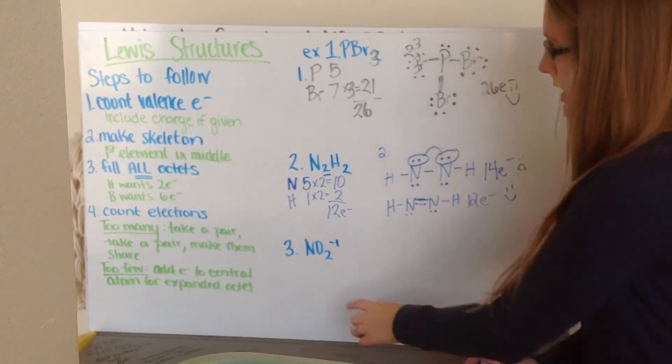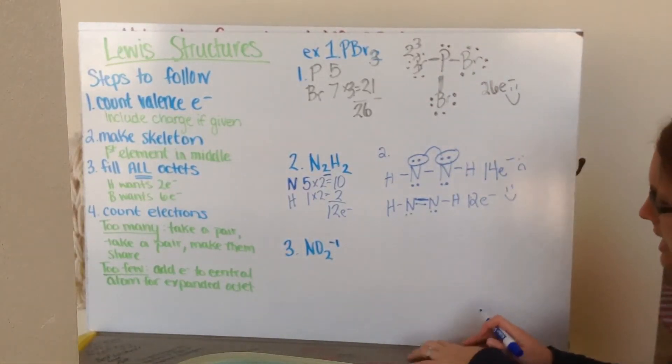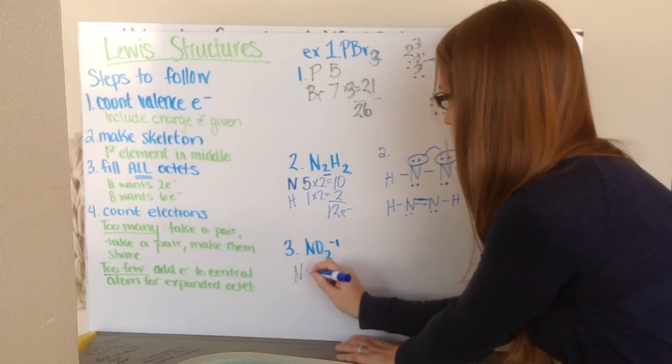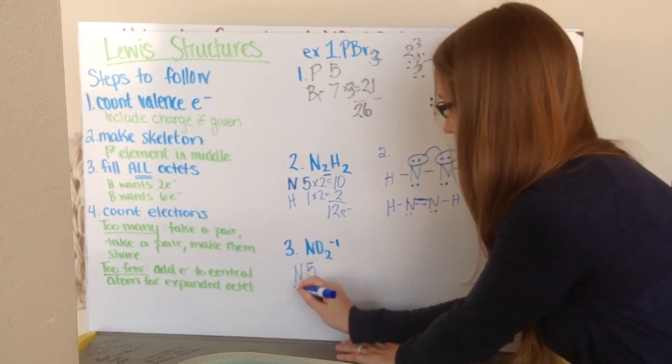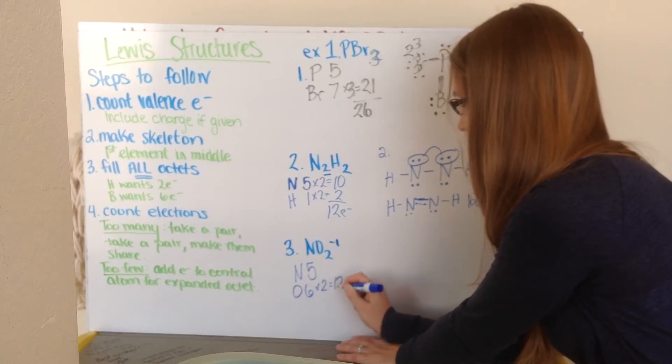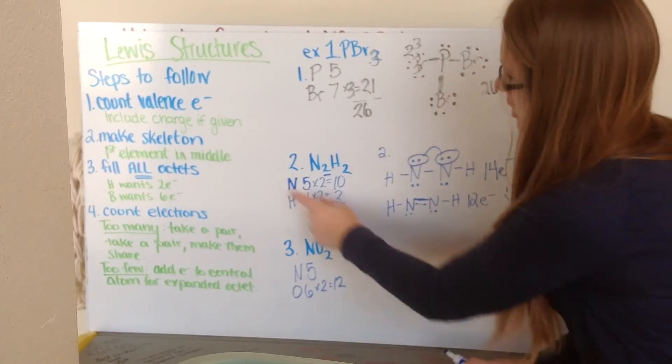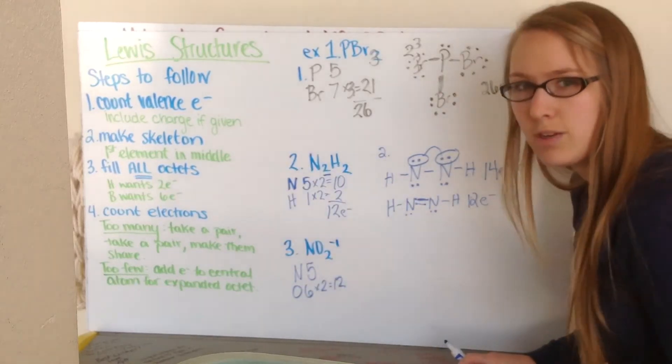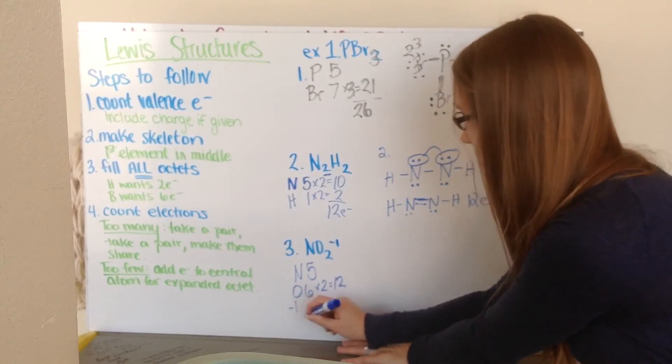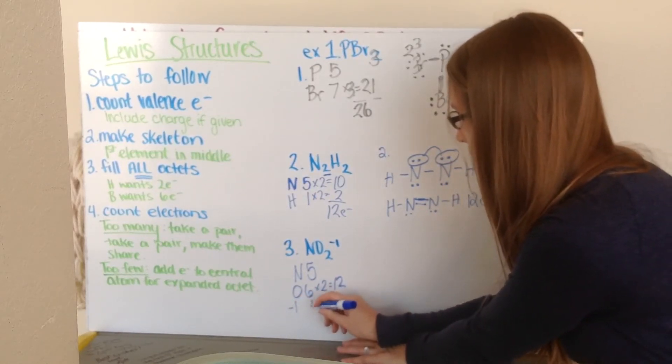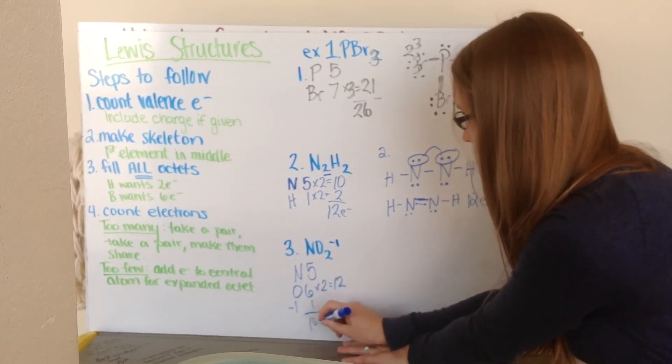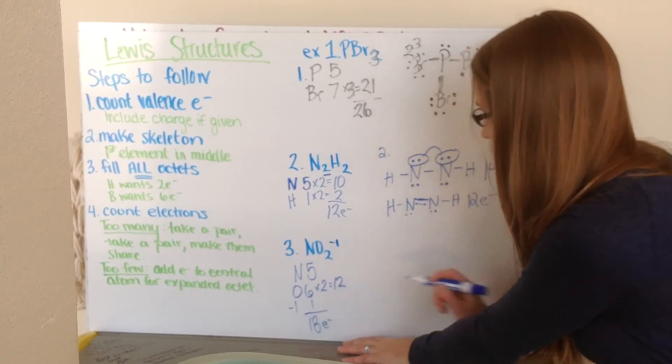Example number 3. I have my nitrite ion here, my NO2-. So nitrogen is in group 5. I have one of them. Oxygen is in group 6. I have 2 of those. And then I can't forget about my charge, because my memory says include those charges. Now if I have a negative 1 charge, it means that I have one more electron. So I have to incorporate that when I'm counting my number of electrons. So a negative 1 here tells me I have one more. So when I add them up, I have 5 plus 12, which is 17, and one more is 18. So I have 18 total electrons to play with.